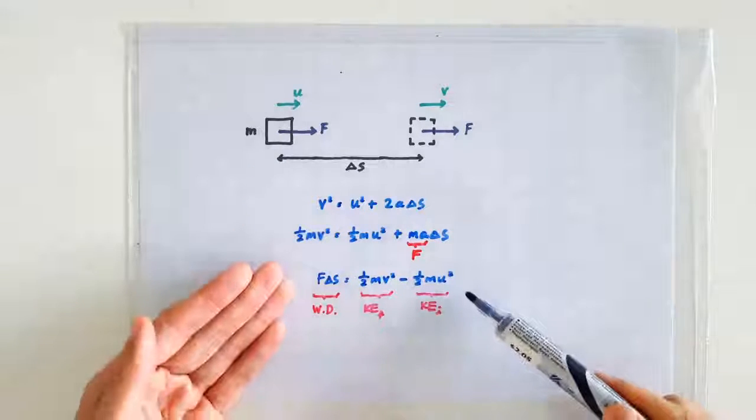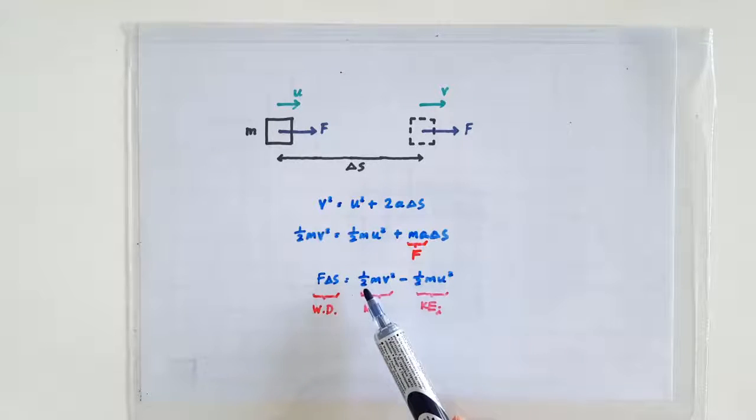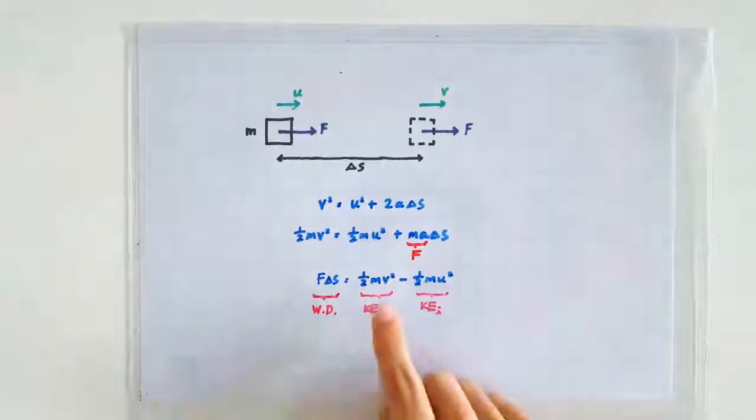And under our formulation, the kinetic energy should be given the formula half times m times the speed squared. So now you know why it is half mv squared and not say half mv cubed.